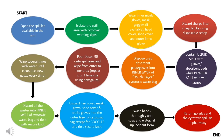Wipe several times with water until clean, using new gauze every time. Discard all waste into the inner layer of the cytotoxic waste bag and tie it with a secure knot. Discard hair cover, mask, gown, shoe cover, and natural gloves into the outer layer of the cytotoxic bag — except for goggles — and tie a secure knot. Finally, wash hands with soap and water, fill up an incident form, and return the goggles and cytotoxic spill kit to the pharmacy.